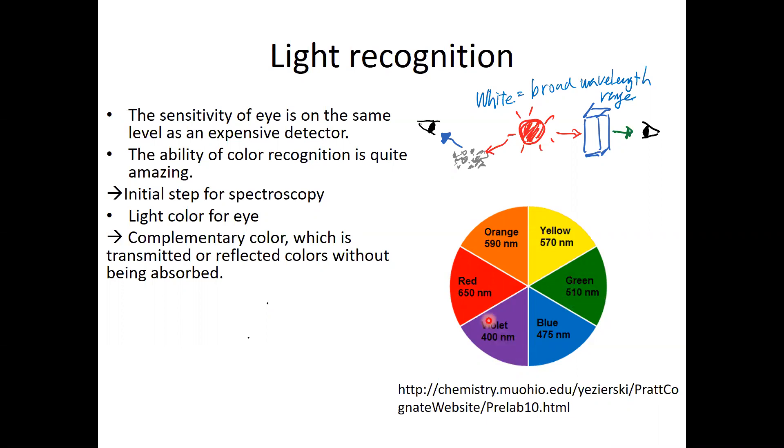As you can see, only by checking the color, you can roughly know which wavelength region does the sample you are dealing with have the absorption. This is the very first initial step for the spectroscopy. Please use your eye for understanding your material at first in any cases. With that, let me finish the lecture one.